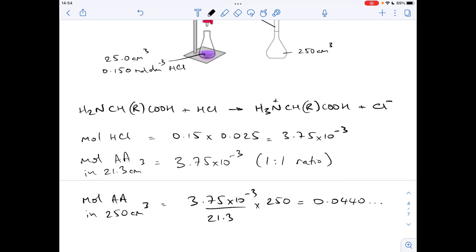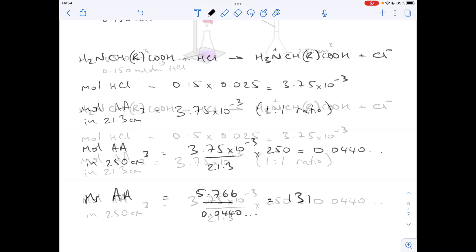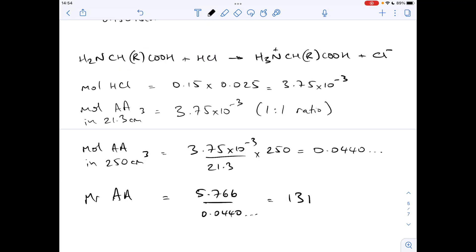So the MR of the amino acid is going to be the mass divided by those moles. And you can see that's coming out at 131.